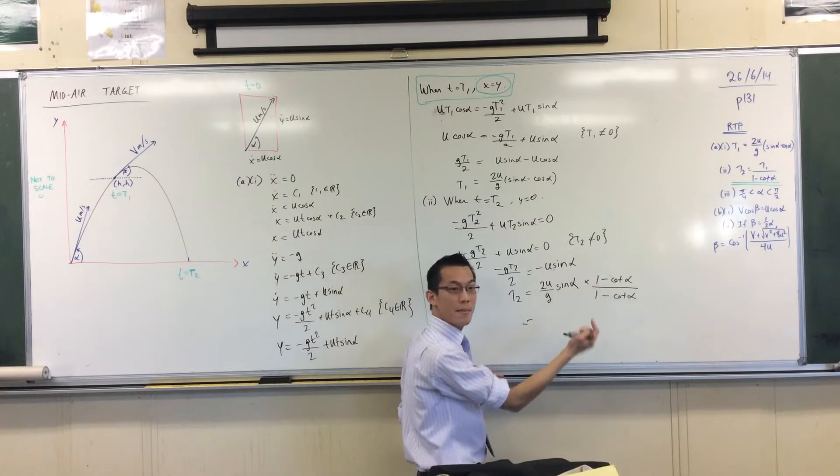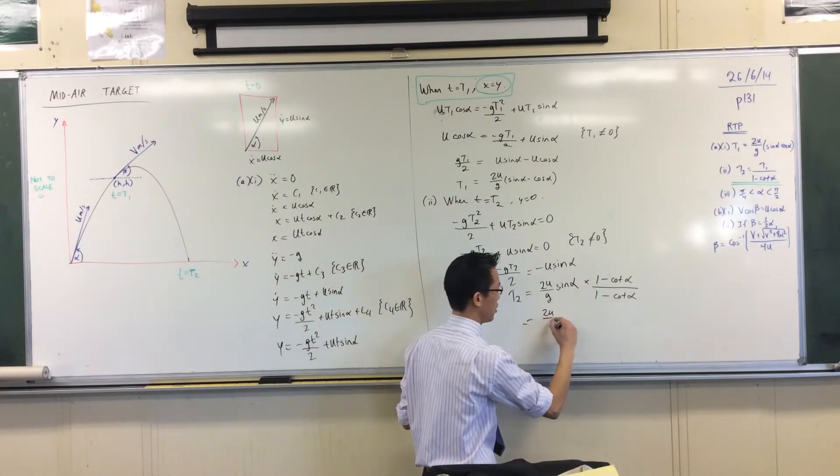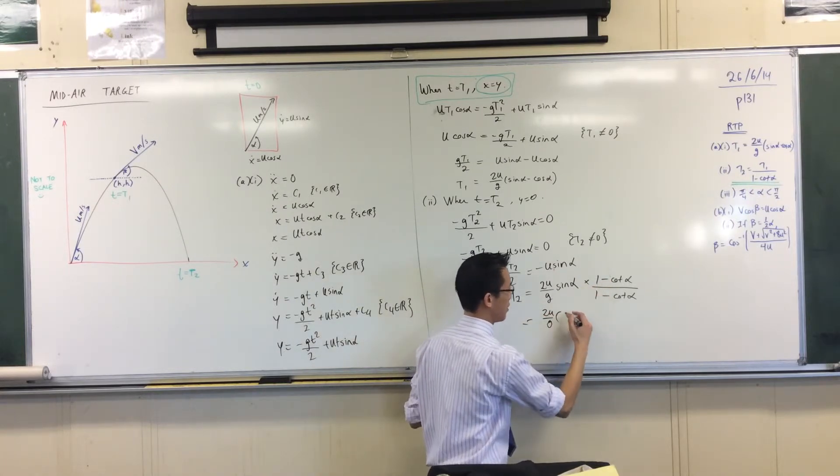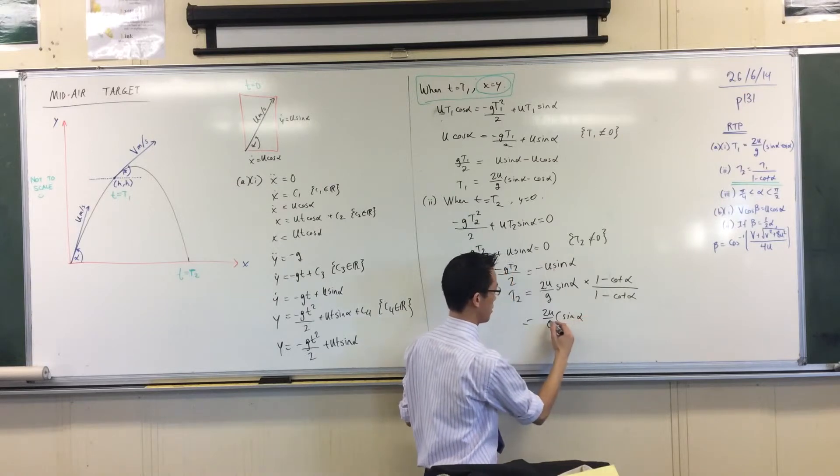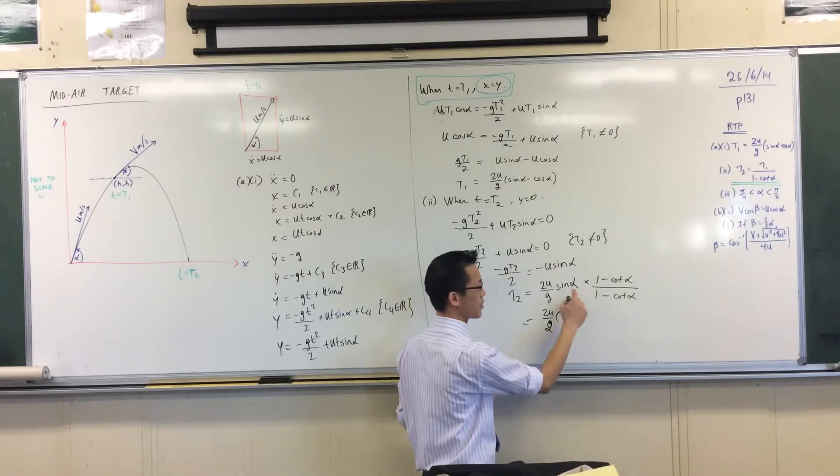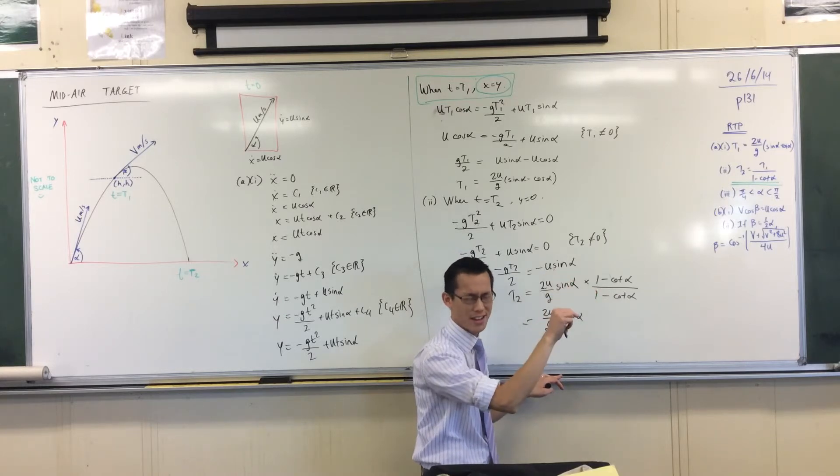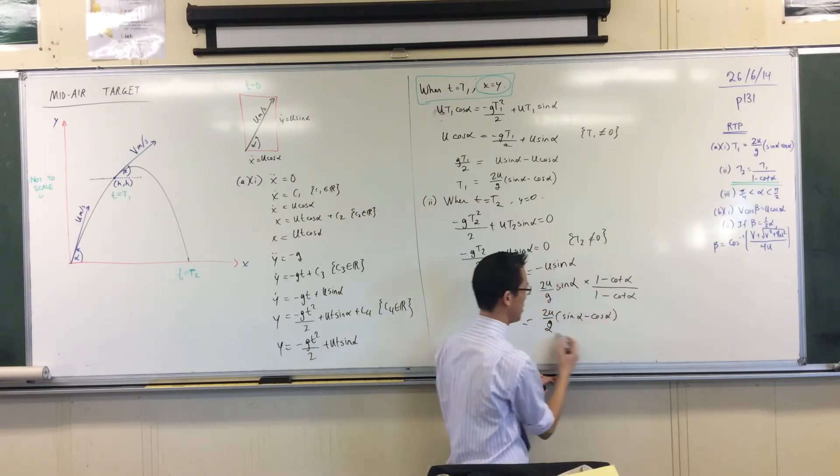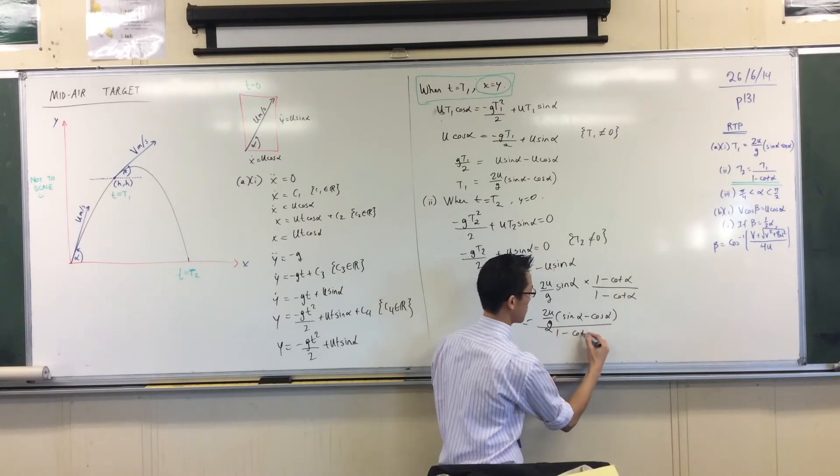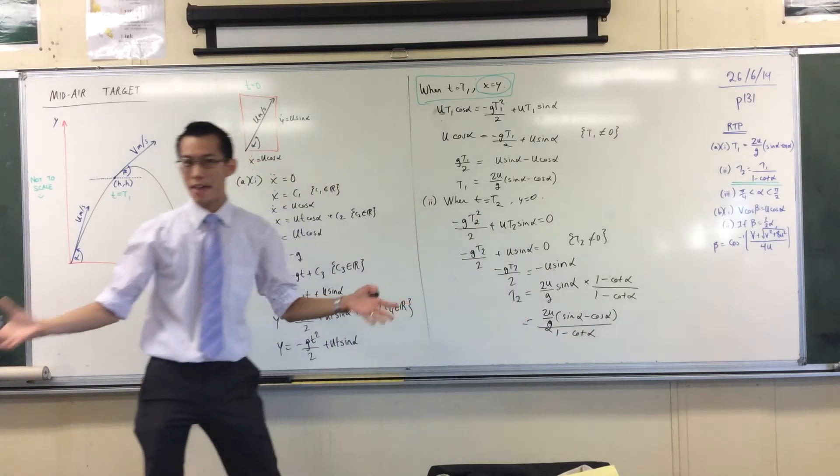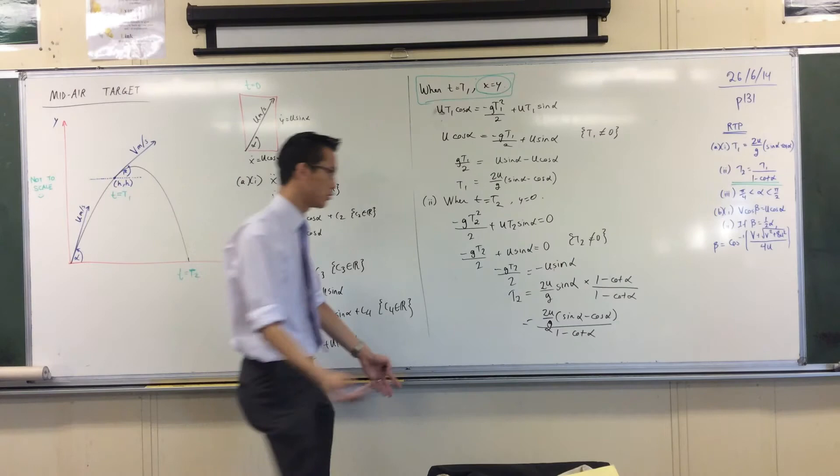Ah, but you can see what's going to happen, can't you? This thing here, when I multiply by the numerator, right, your 2U on G is out the front. Sine alpha times 1. Sorry, that's a G. Sine alpha times cot alpha. That's cos on sine times sine. That's cos, there you go. Just as you expected. See it? And there's your T1 on the numerator. Cool, that's it.